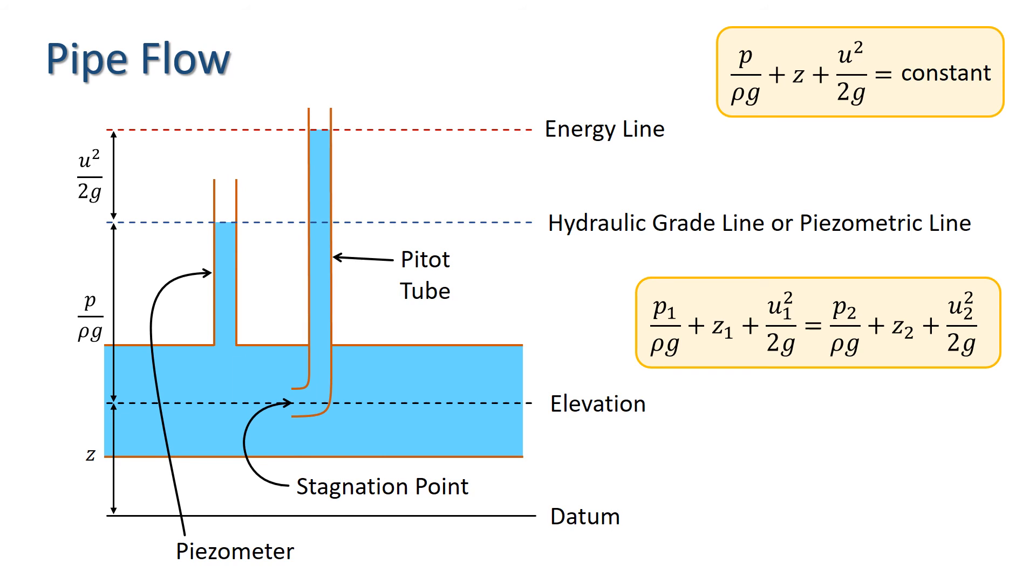In practice, the terms in the Bernoulli equation can be used as a means of calculating the pressure and the velocity in a pipe, as shown here. A piezometer is used to calculate the pressure head, and a pitot tube can be used to measure the total energy.